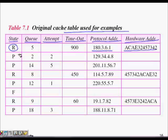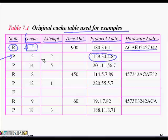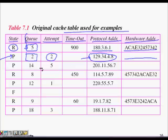In the cache table, a resolved entry ('R') for a given IP address holds the corresponding MAC address and the queue number to which packets for that destination should be forwarded. A pending entry ('P') shows the number of attempts made to find the MAC address, the queue holding packets waiting, and no MAC address yet — as seen for entries like 201.11.56.7F.